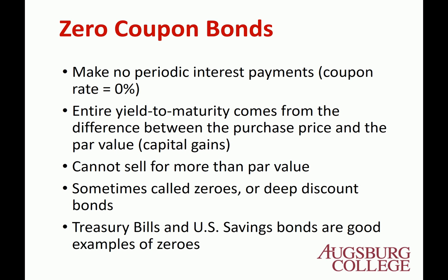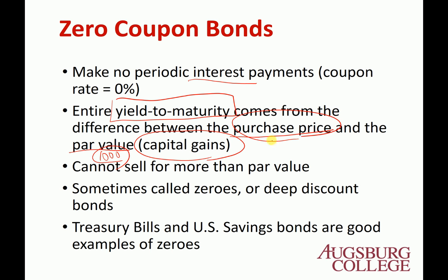Zero coupon bond is the bond that does not pay any coupon. The entire YTM return comes from the difference between the purchasing price and the par value, which is called the capital gain. The par value is 1,000, and the purchase price should be a lot lower than 1,000. It cannot sell for more than par value because the coupon rate is always zero — it's always less than YTM. So it's always a discount bond, sometimes called a deep discount bond, or just 'zeros.' T-bills and U.S. savings bonds are good examples.